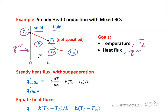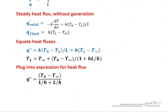That's the conductive flux through the wall. Through the fluid, it's given by Newton's formula: the heat transfer coefficient times the temperature difference TL minus T-infinity. Since they must be equal at steady state without generation, we set those two fluxes equal to each other. The only unknown is TL, so with a little algebra and rearranging we can solve for TL — the temperature on the right-hand side of the wall — meeting our first goal. Then we plug that result back into the equation for the heat flux, either conductive or convective, to find our second goal: the heat flux.